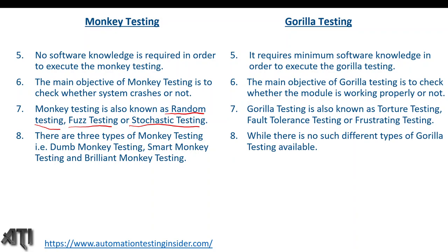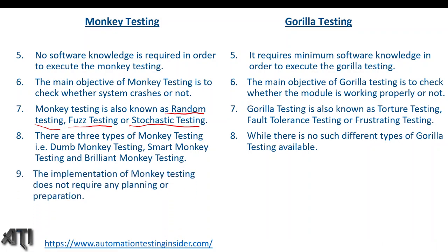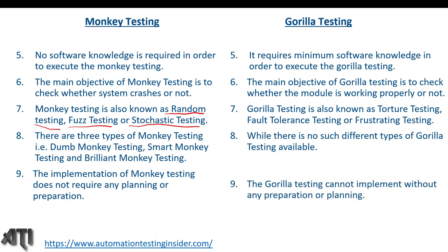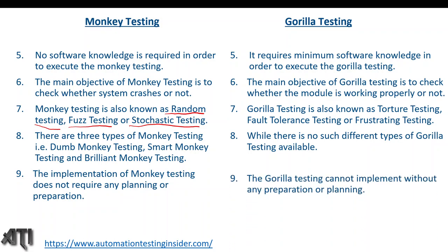There are three types of monkey testing: dumb monkey testing, smart monkey testing, and brilliant monkey testing. There are no such different types of gorilla testing available. The implementation of monkey testing does not require any planning or preparation, whereas gorilla testing cannot be implemented without preparation or planning — there should be a certain plan and some test cases to perform gorilla testing.